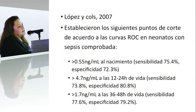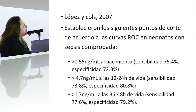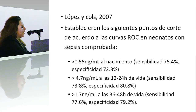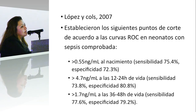Este marcador parece ser uno de los mejores para sepsis neonatal, pero resulta que en los recién nacidos prematuros la procalcitonina se eleva de forma fisiológica en los primeros cinco días de vida. Entonces, un marcador de este tipo requiere que se establezcan normogramas en este tipo de población. López y colaboradores en el 2007 hicieron algunos cortes para prematuros con sepsis comprobada: más de 0.55 al nacimiento, más de 4.7 a las 12-24 horas de vida y más de 1.7 a las 36-48 horas de vida.